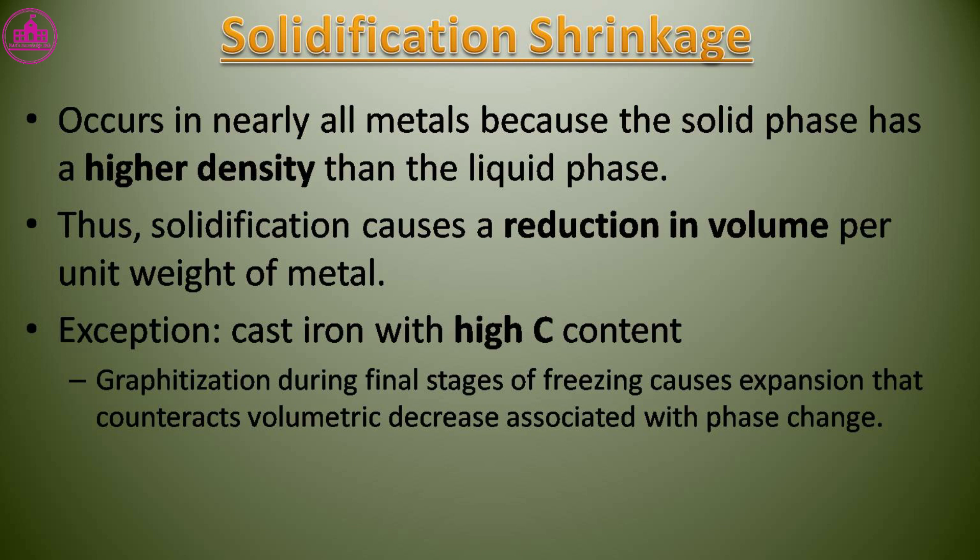Solidification causes a reduction in volume per unit weight of metal, because the solid phase has a higher density than the liquid phase. An exception is cast iron with high carbon content — graphitization during the final stages of freezing causes expansion that counteracts the volumetric decrease associated with the phase change.